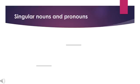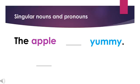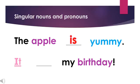Here are more examples using singular nouns and singular pronouns. The apple, blank, yummy. The apple is a singular noun, so we will use "is." The apple is yummy. Next: It, blank, my birthday. It is a singular pronoun, so we will use "is." It is my birthday.